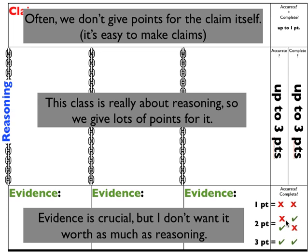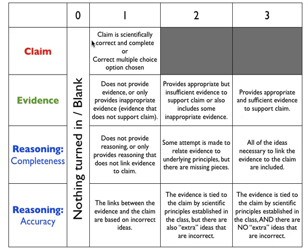Since we have different gradations, this calls for a rubric. We've created a written rubric that defines things more clearly: the claim is worth one point, evidence up to three points, and reasoning has two separate criteria — completeness and accuracy — each up to three points. Each box spells out what makes a three different from a two. For example, a three in reasoning means evidence is tied to the claim by scientific principles established in class with no incorrect extra ideas, whereas a two has some extra things that aren't quite correct. We'll be using this rubric for almost everything throughout the entire semester, and you'll get practice with it in your homework.